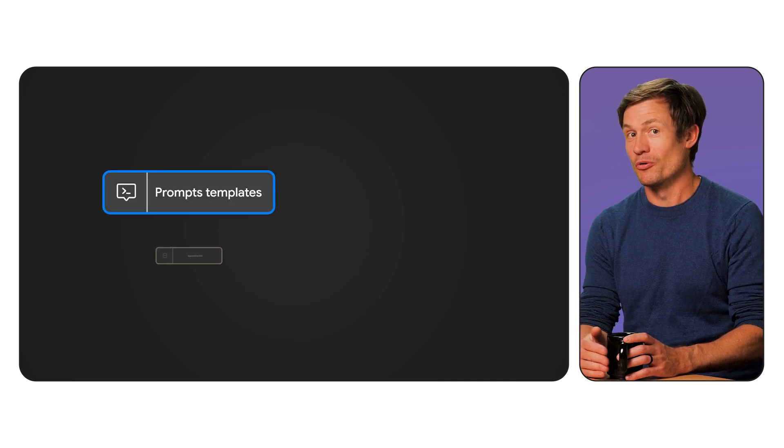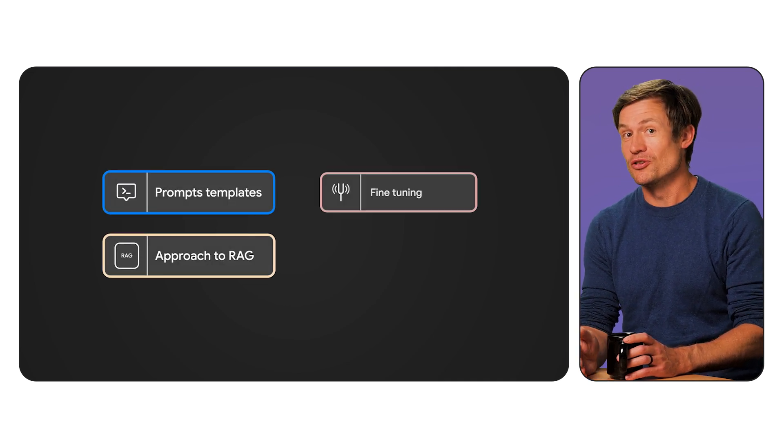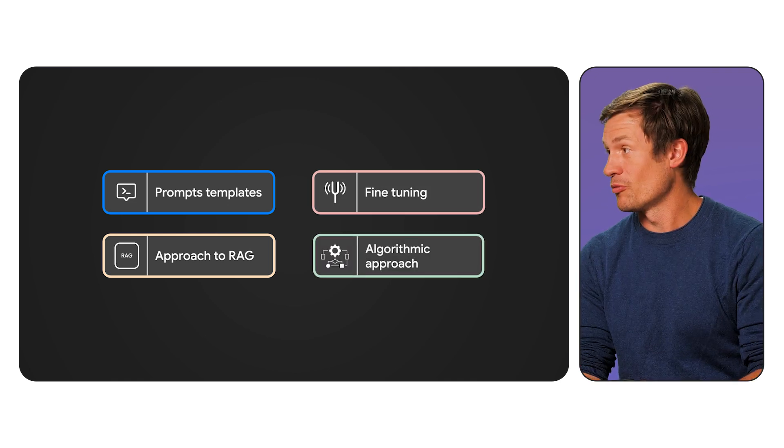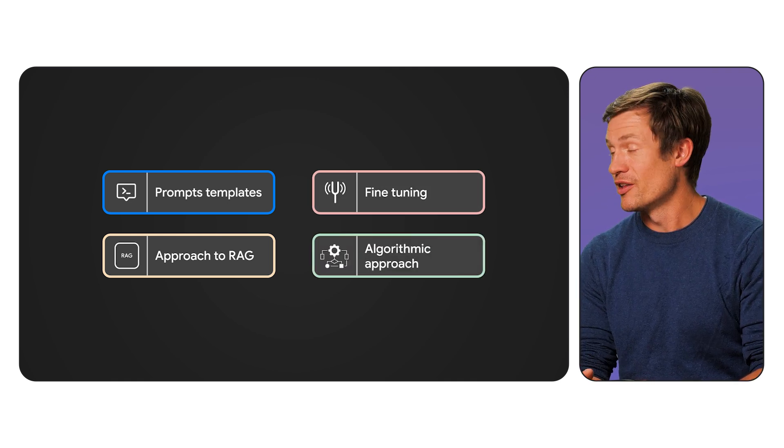Wouldn't a model with better benchmark scores make my application also perform better? Not necessarily. A better model will help, but there are other factors like your prompt templates, your approach to RAG, and any fine-tuning that you've done — such as your algorithmic approach or quantization — that can change your actual quality. So today we're talking about evaluating the code we write, not the code that is in the model we're using.